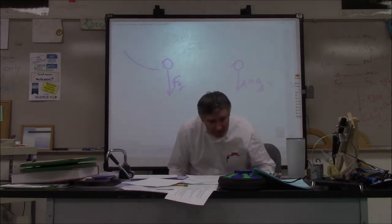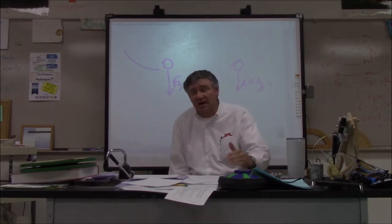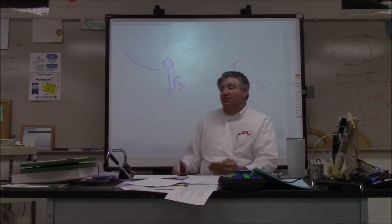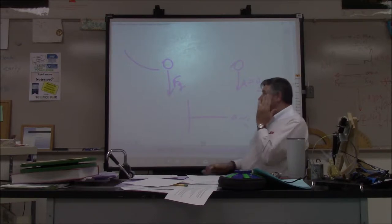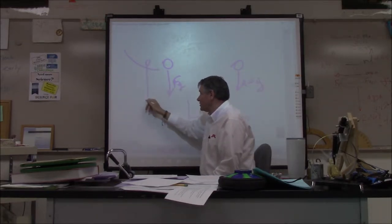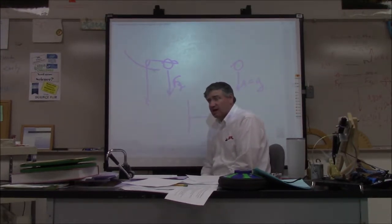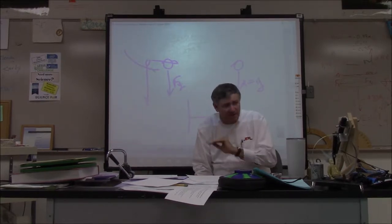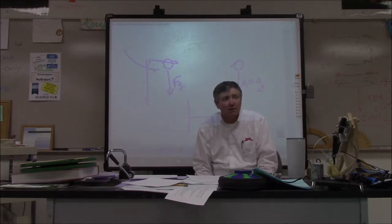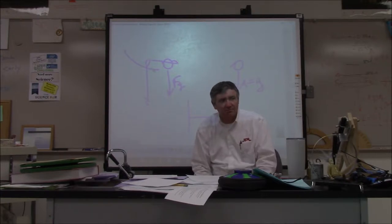The next thing you want to do on number six is draw your velocity vectors after the ball has left the ramp. Here's zero meters per second. You have one that's going to be shot out horizontally. Here's your horizontal velocity. What's the only way that you can change the slope of a velocity-time graph? Change the forces.